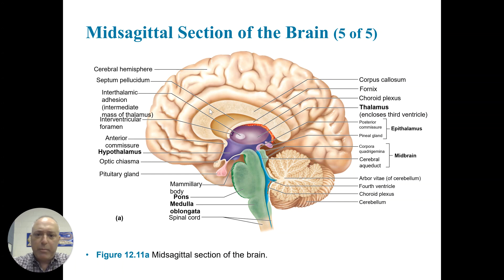This is a mid-sagittal view showing the cerebral hemispheres. Here's the corpus callosum, which connects the hemispheres. The thalamus, which also makes up part of the third ventricle. Then the epithalamus posterior to it, and then inferior — the hypothalamus and the midbrain.